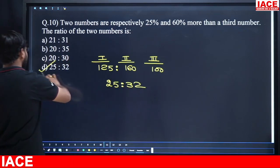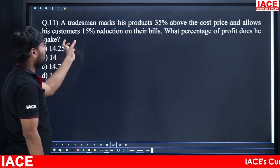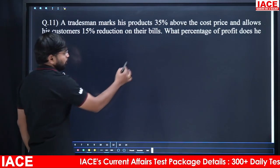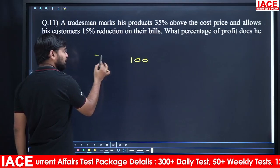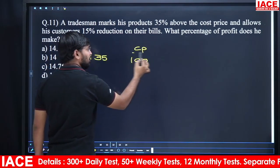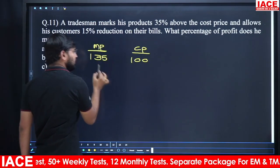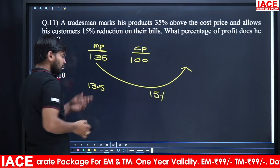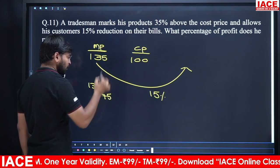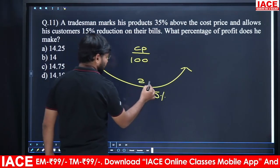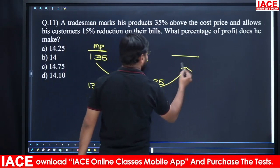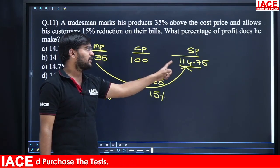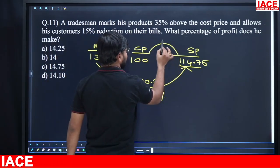A tradesman marks his product 35% above cost price and allows 15% discount on bills. Assume cost price = 100, so marked price = 135. 15% discount: 10% = 13.5, 5% = 6.75, total discount = 20.25. Selling price = 135 − 20.25 = 114.75. Cost price = 100, so profit percentage = 14.75%. Option C is the right answer.